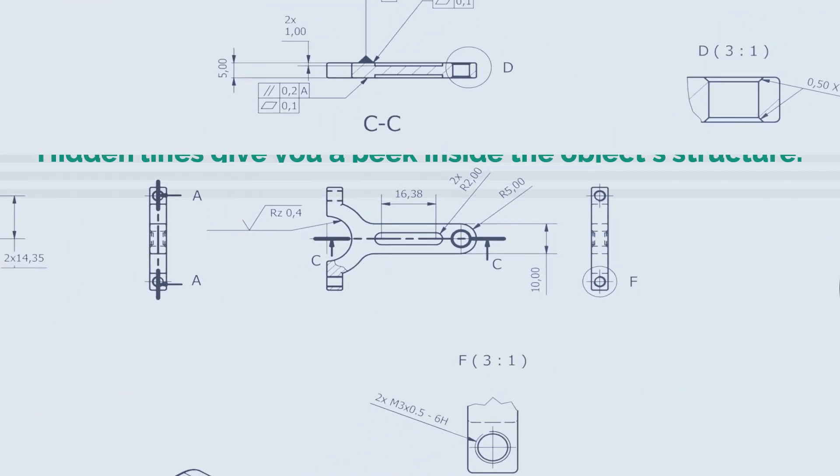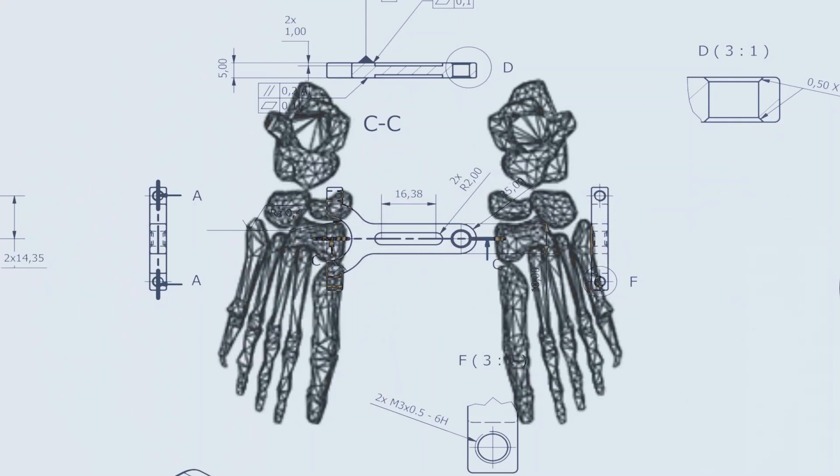So, in summary, hidden lines give you a peek inside the object's structure. They show you what's going on beneath the surface, sort of like x-ray vision, but in a technical drawing.